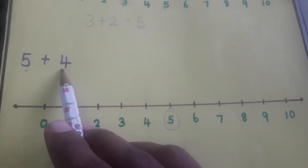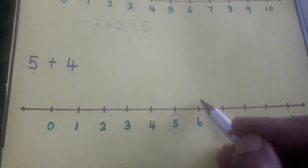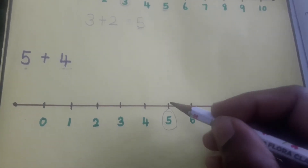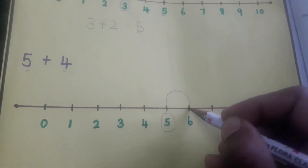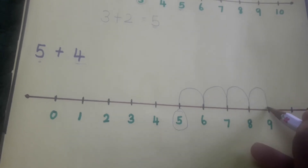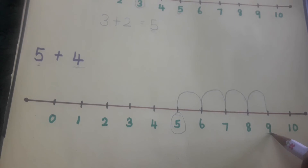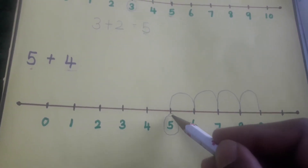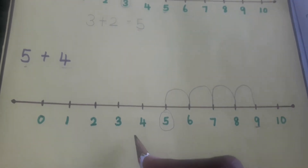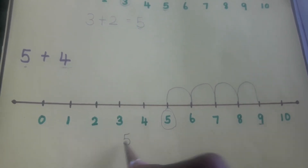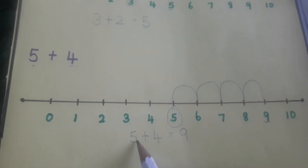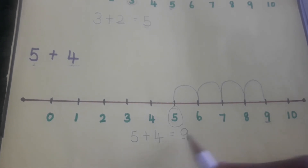We are going to add 4 with 5, so we have to jump 4 times after 5. Let us jump 4 times from 5: 1, 2, 3, 4. Now we have reached number 9. When we jump 4 times after 5, we get 9. So 5 plus 4 is equal to 9.